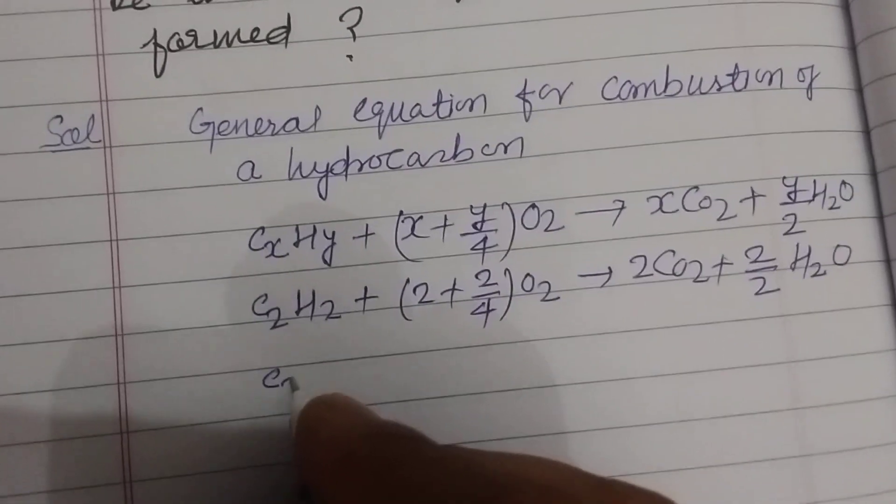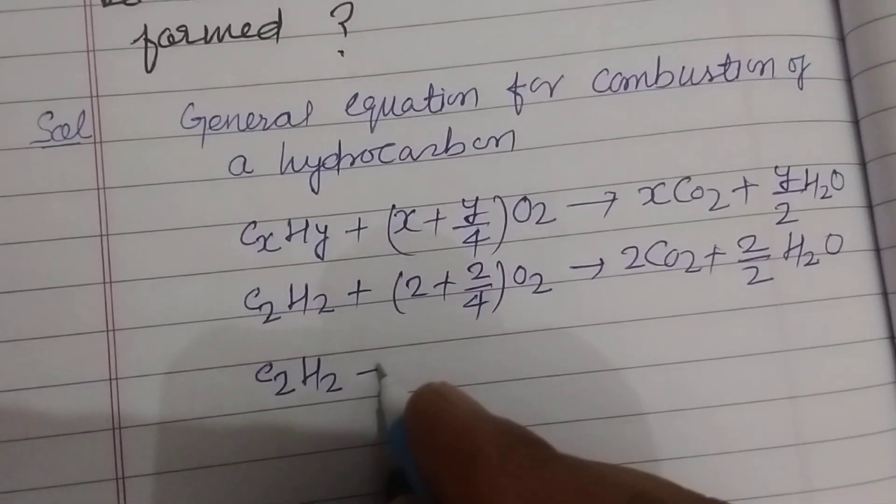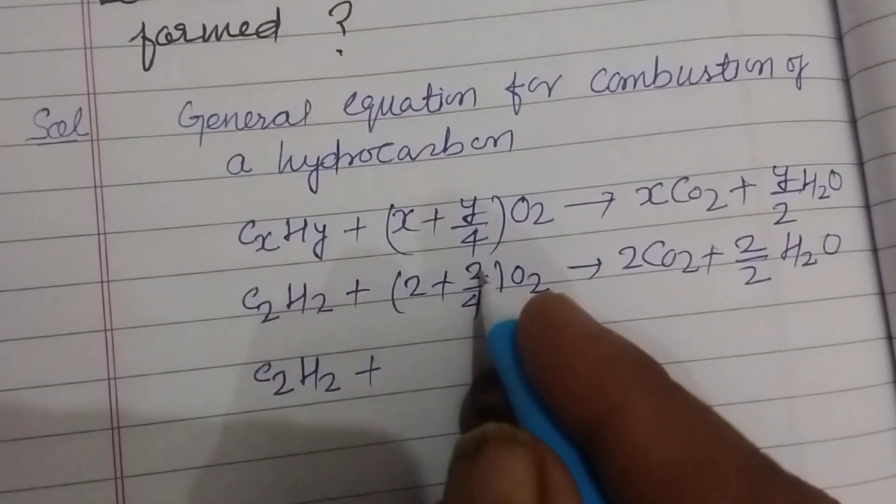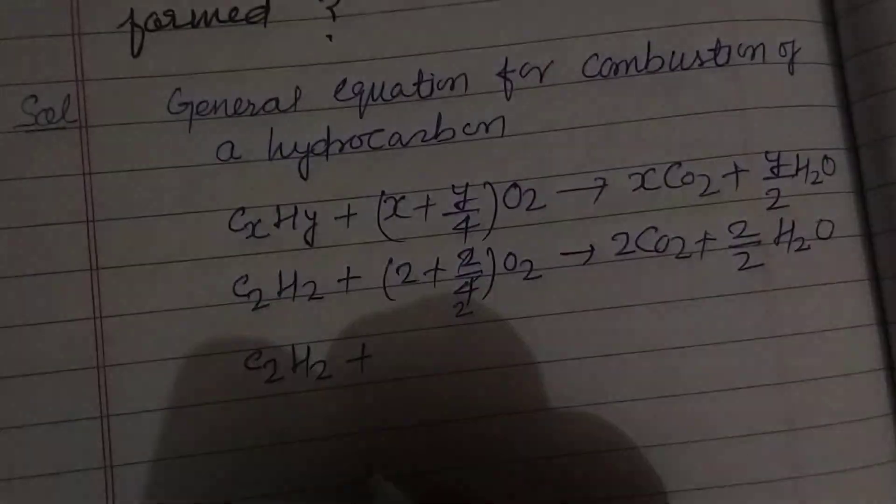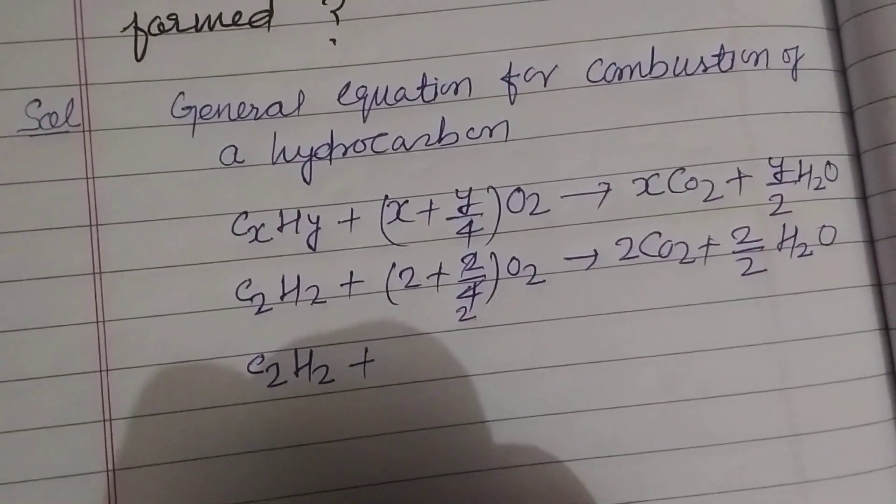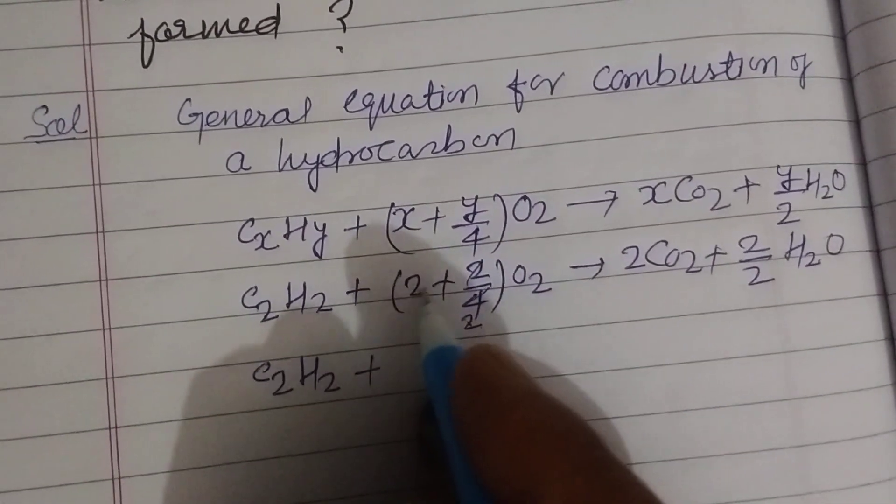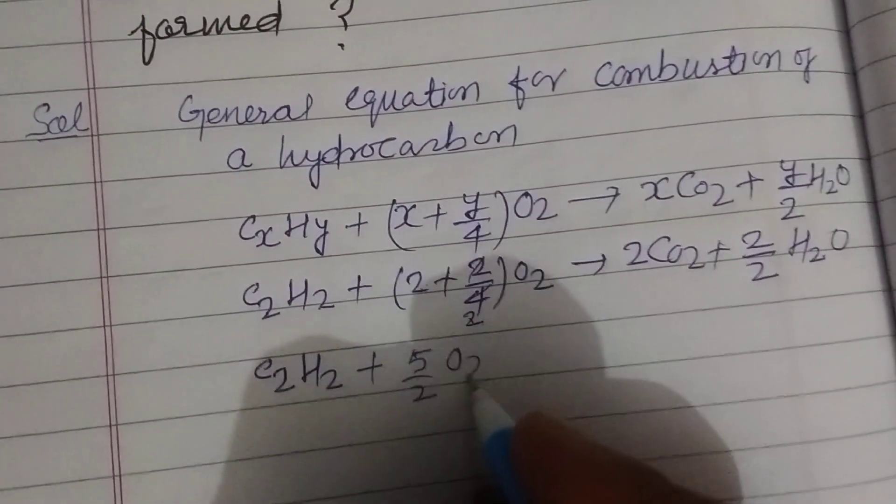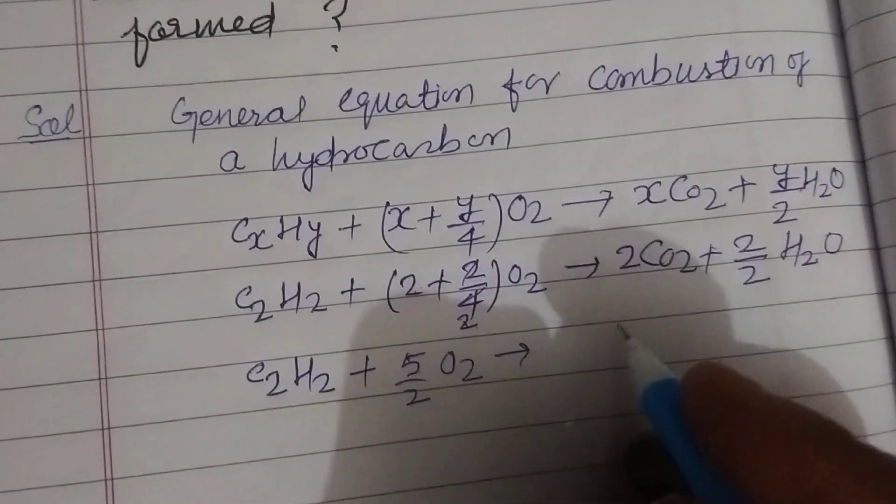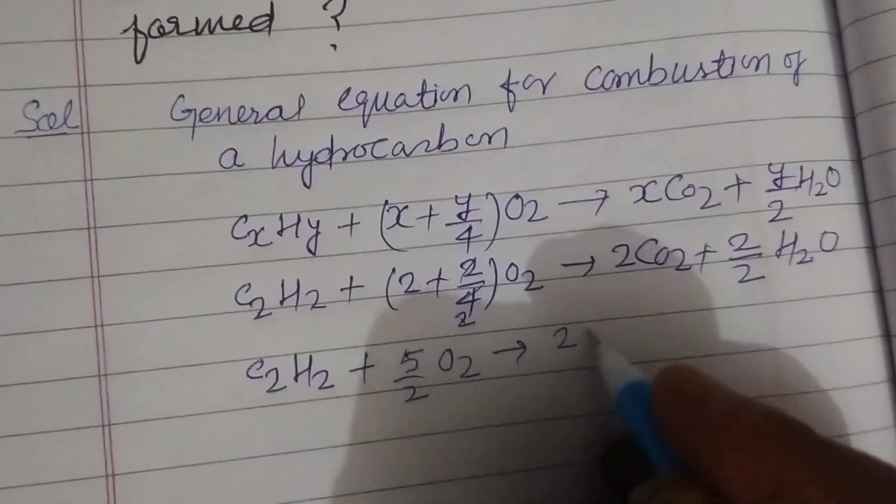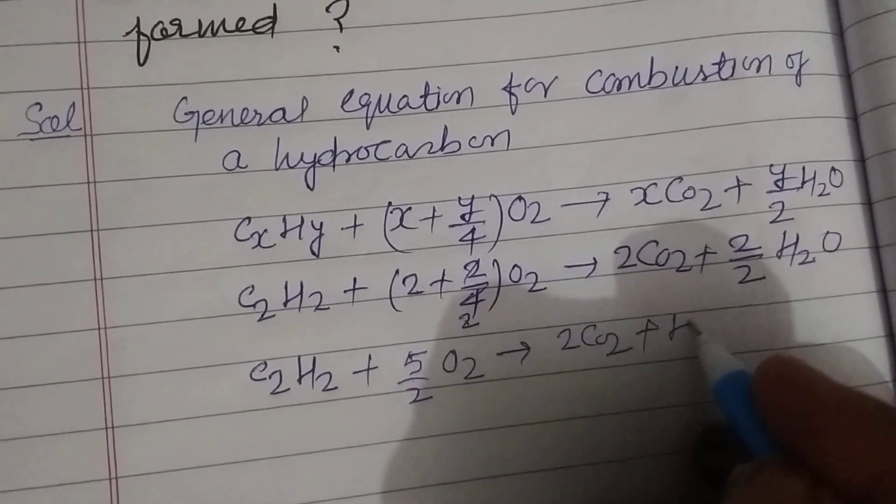So the combustion equation of acetylene: C2H2 plus, this is 2/4, 2/2, and this is 4/4, 5/2 O2 is equal to 2 CO2 plus H2O.